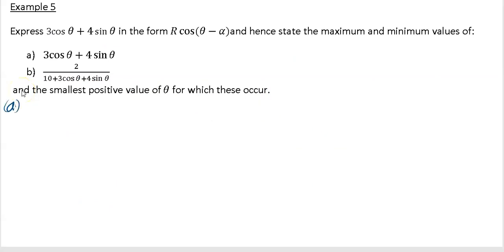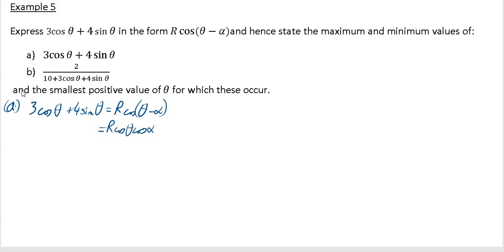In this example it says express 3 cos θ + 4 sin θ in the form r·cos(θ - α), and hence state the maximum value. So we write the expression 3 cos θ + 4 sin θ equal to r·cos(θ - α), which expands to r·cos θ·cos α + r·sin θ·sin α.